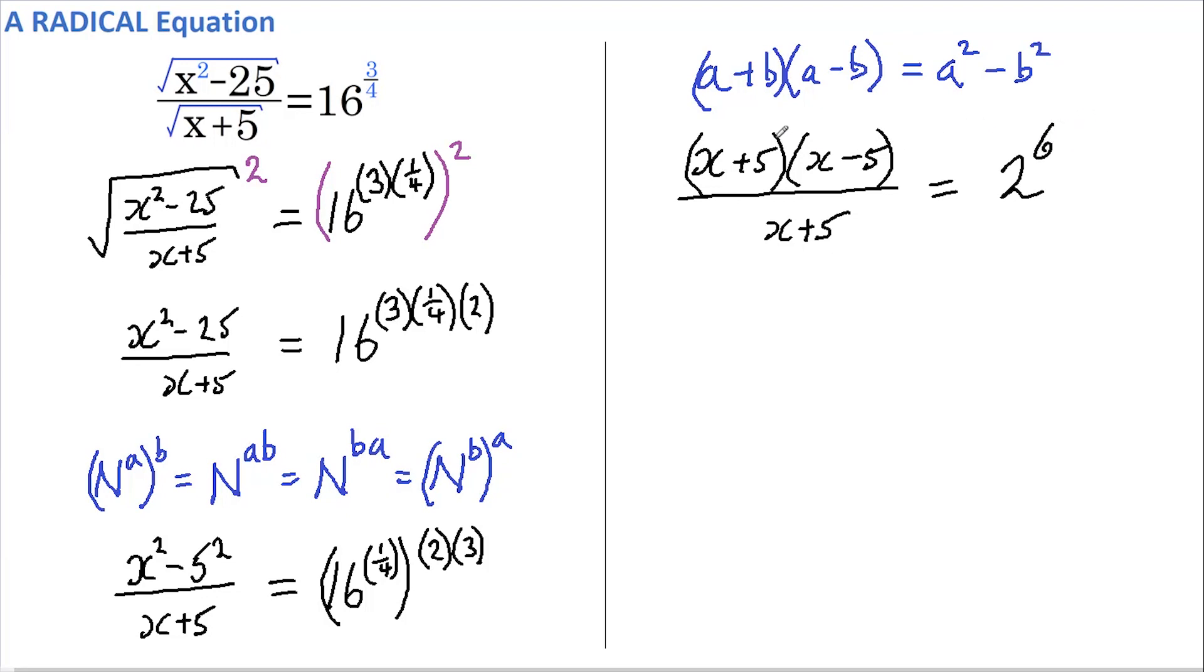Now, on the left-hand side, we can do some cancelling. The x plus 5 and the x plus 5 cancel. So we're just left with x minus 5 equals 2 to the 6, which is 64.